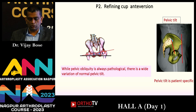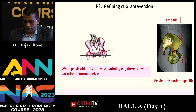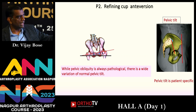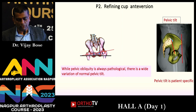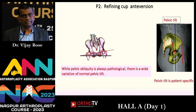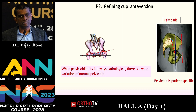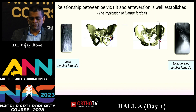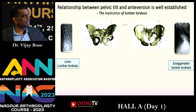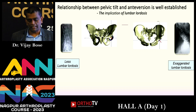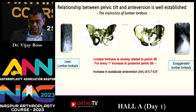While pelvic obliquity is always pathological, there is wide variation in normal pelvic tilt — it is patient-specific. We are now incorporating pelvic tilt into component positioning. Pelvic tilt refers to the angle made by the line joining the center of the hip to the center of the sacrum relative to the vertical. Native version is constant and bony, but functional version changes with lumbar lordosis and sacral slope. As the pelvis tilts forward, version increases; posteriorly, it decreases. Quantitatively, for every degree of posterior pelvic tilt, acetabular version changes by 0.7 to 0.8 degrees.